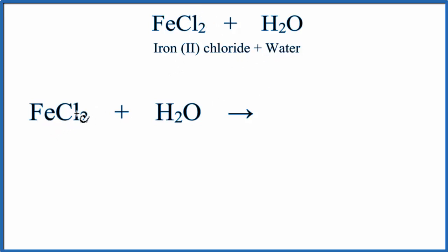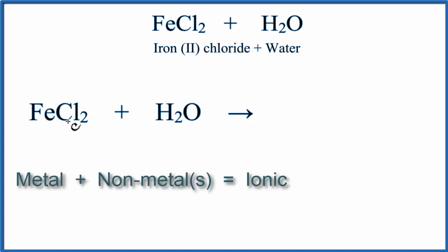Iron, that's a metal, and then chlorine's a non-metal. So when we have a metal and a non-metal, that's an ionic compound, and often they're soluble in water.